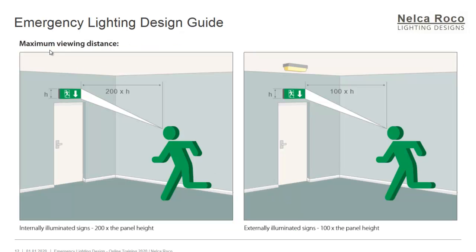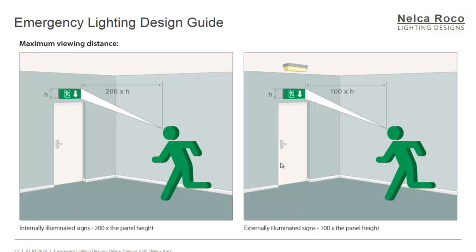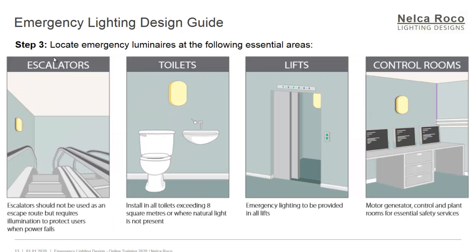Aside from the images for the exit sign, you should also consider the maximum viewing distance of the fitting. For example, if it is an internally illuminated sign, it should be visible from 200 meters. If it is externally illuminated, it should be visible from 100 meters.